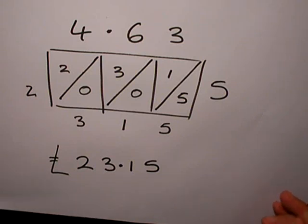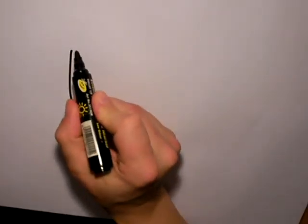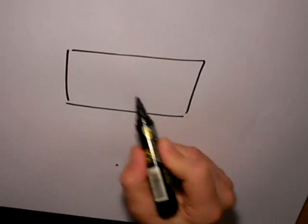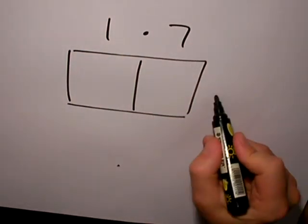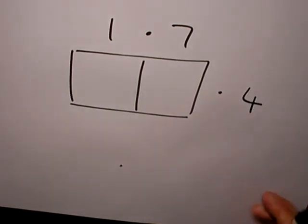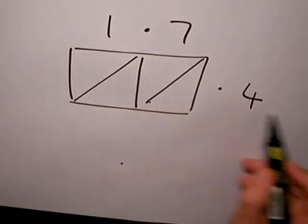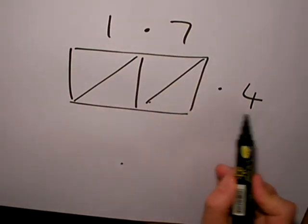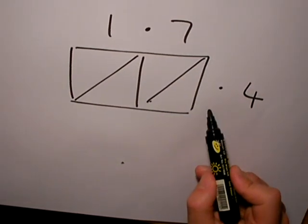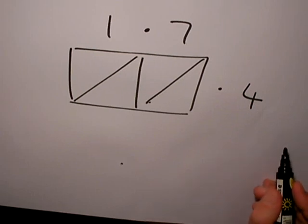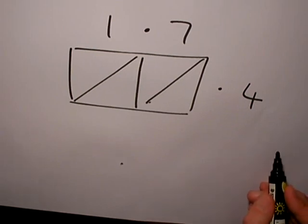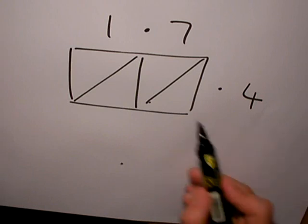The next multiplication I'm going to do is a decimal multiplication again. I'm going to do 1.7 multiplied by 0.4. Now draw my diagonals in. Decimal here, decimal here is 0.4. I don't need to put 0.4 because multiply by 0 doesn't create anything, so I'll just multiply by 4. Filling my grid, 7 times 4 is 28 and 1 times 4 is 4.